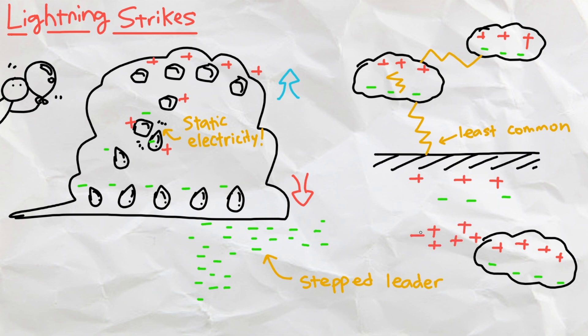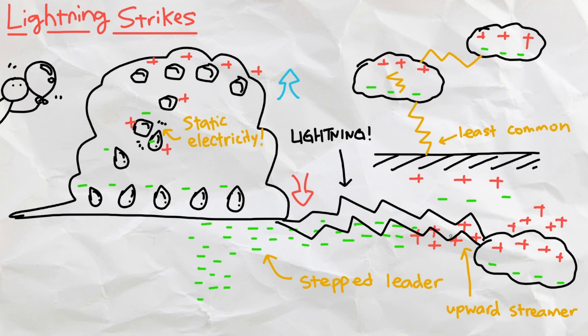Similarly, positive charges can also form a path, called an upward streamer, towards negative charges. The moment these two paths meet, a circuit is completed and an electrical discharge is released, forming lightning. This is why lightning is considered static electricity, since it's caused by a difference of charges, instead of moving electrons.